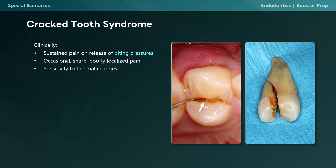And finally, we have sensitivity, typically to thermal changes and mild stimuli such as sweet or acidic foods. Radiographic evidence of Cracked Tooth Syndrome can only really be seen on cone beam CTs. Mesiodistal cracks in particular are near impossible to visualize on 2D radiographs since the line of fracture isn't in the same plane as the X-ray beam.